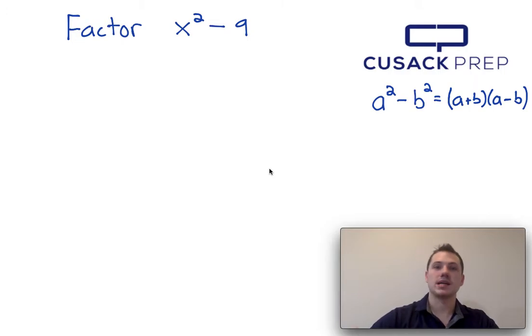We know that because our first term, x squared, is a perfect square, and our second term, 9, is also a perfect square.